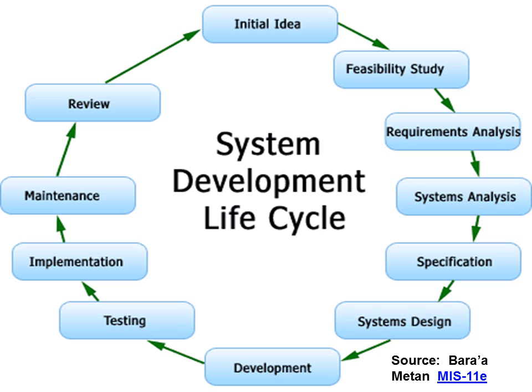This is the system development life cycle. You first have an initial idea, then you conduct a feasibility study, followed by requirements analysis to determine what is required. Then the system analysis determines what type of system needs to be used, and the specification outlines what all needs to be used. Next comes system design, then the development stage, the testing stage, and then the implementation stage. After implementation, you conduct maintenance, followed by a review of the process. This image illustrates the system development life cycle.